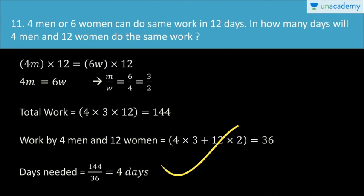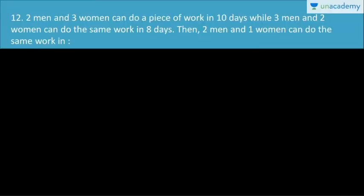This is another question. Two men and three women can do a piece of work in 10 days, while three men and two women can do the same work in 8 days. Two conditions are given. Then, how many days can two men and one woman do the same work? Two things are doing the work.